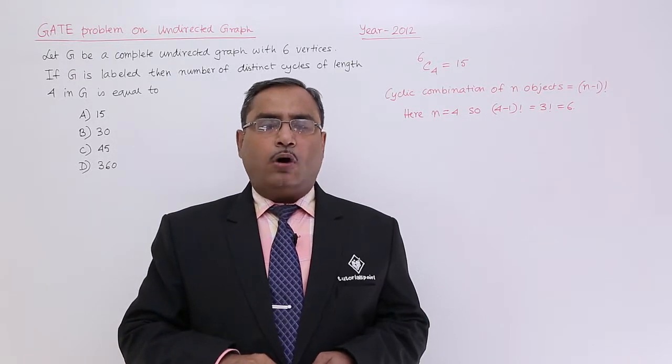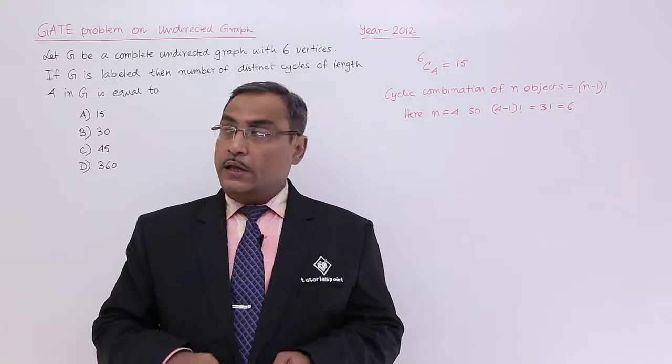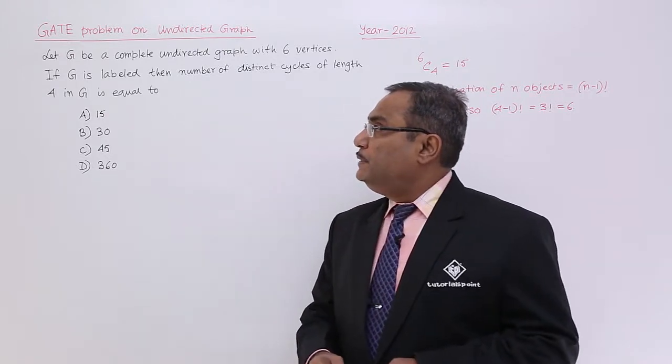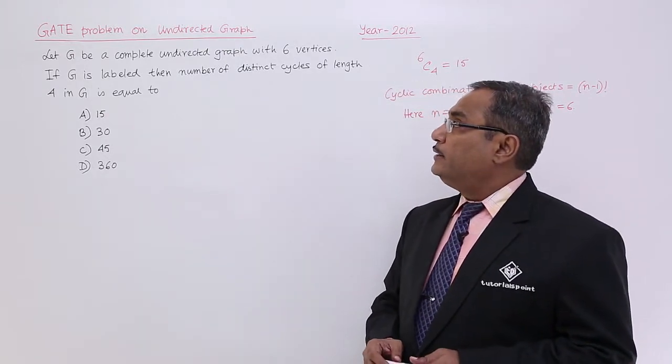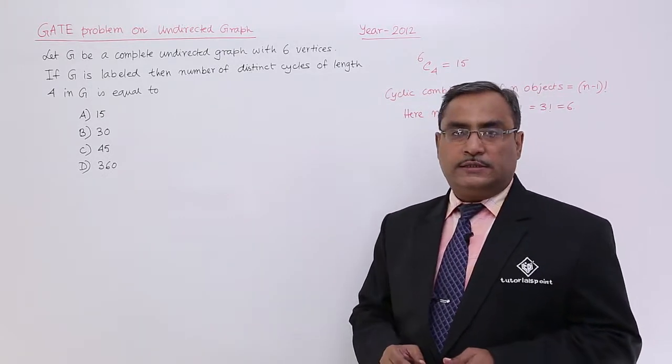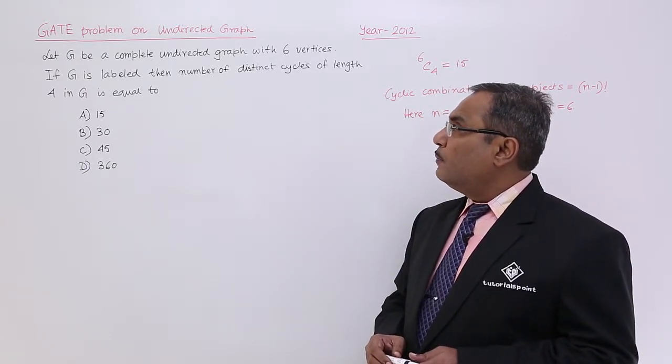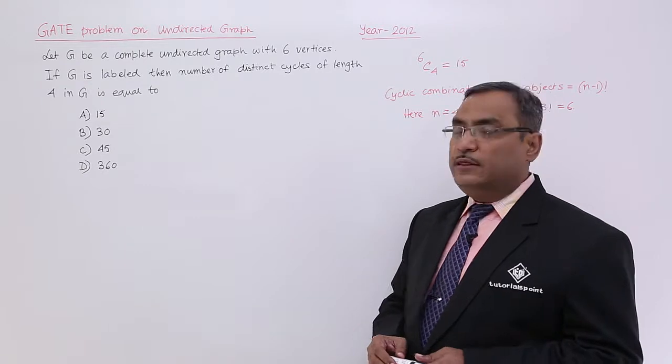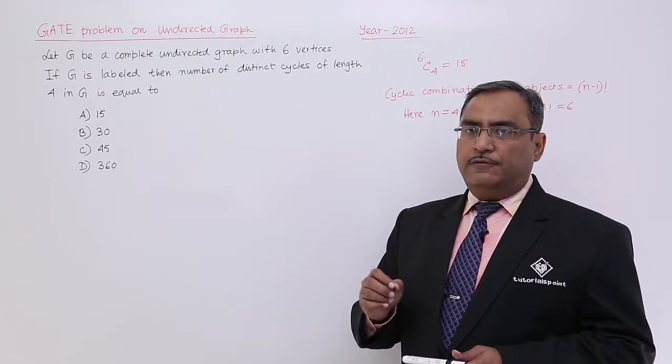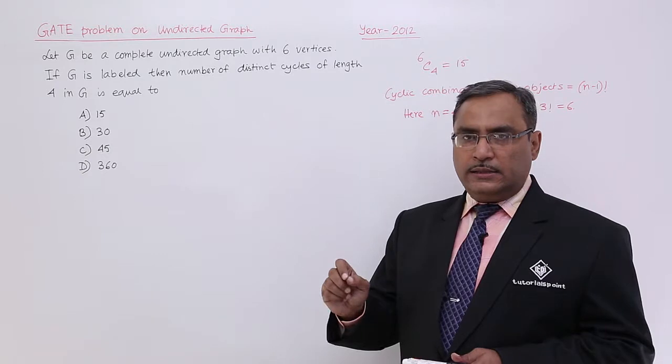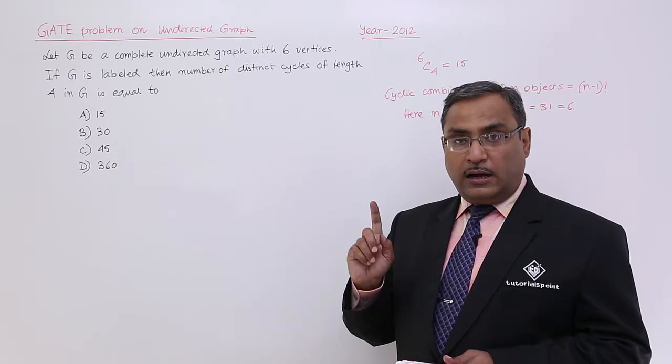Let us solve another GATE problem on undirected graphs. Here is the problem: Let G be a complete undirected graph with 6 vertices. If G is labeled, find the number of distinct cycles of length 4 in G. That means they are asking for the number of distinct cycles. The graph is labeled and complete.